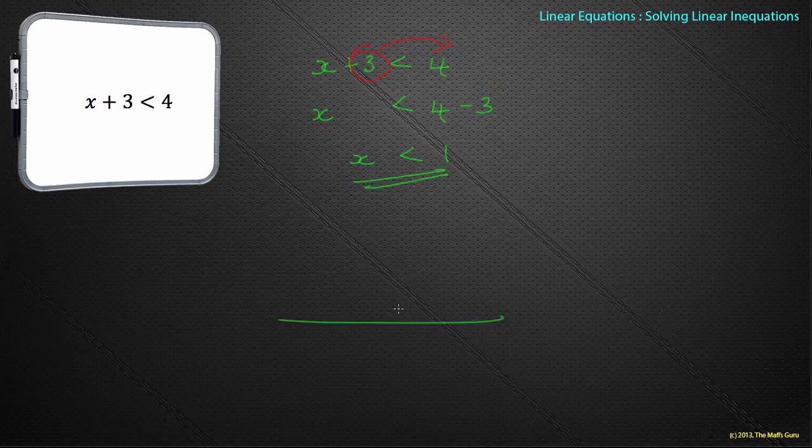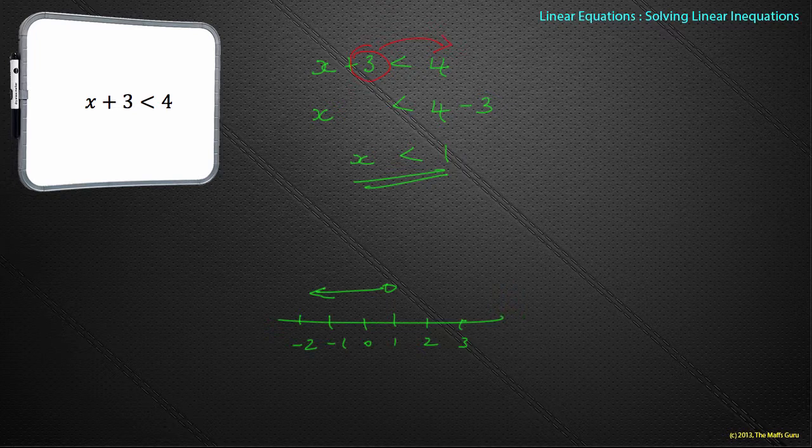There's my answer. If I had to draw that on a number line, there's my number line: 1, 0, minus 1, minus 2. I'm going to draw a circle at 1 and an arrow pointing that way. Will I fill the arrow in? Nope, because it's not less than or equal to 1.